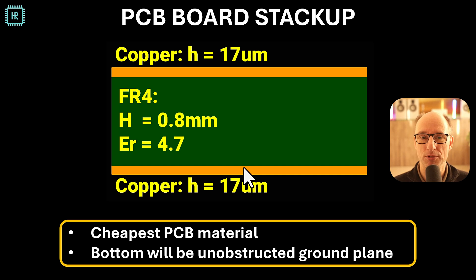Before we can enter all the parameters in COUX we need to know what kind of board stack up we're using. We're using the cheapest material there is. We're using FR4 with a height of 0.8 millimeters. The epsilon R is 4.7 with 17 micrometers of copper on the top and the bottom. And the bottom will be an unobstructed ground plane.